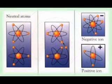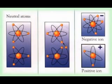Unlike protons and neutrons, which are very hard to remove from the atom, electrons can be removed or added with a relatively small amount of energy. An atom with too many or too few electrons is called an ion. When an electron is removed so the atom has more protons than electrons, it is called a positive ion. When an electron is added so the atom has more electrons than protons, it is called a negative ion.